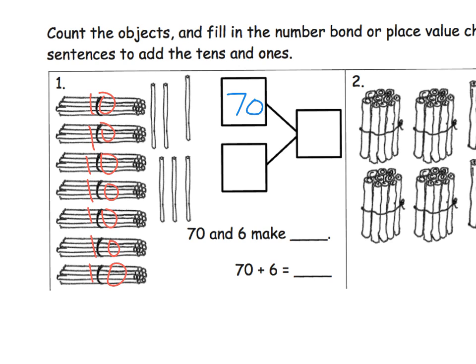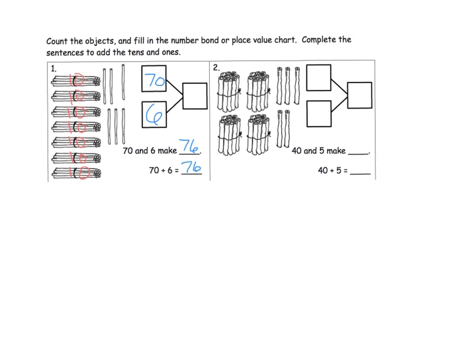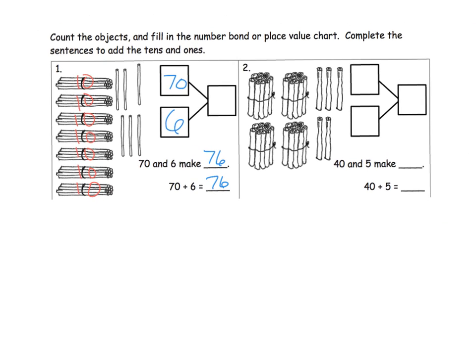We could put it either in the top or the bottom — it does not matter, because addition is commutative, but we'll learn that later. Then let's count the ones. We see that we have 6 ones: 1, 2, 3, 4, 5, 6. So we're going to record that right here. Now we get 70 and 6 make — so what do we have all together? We have 76 all together.